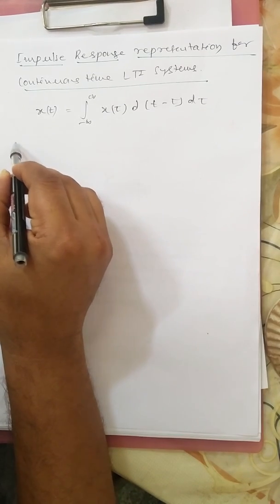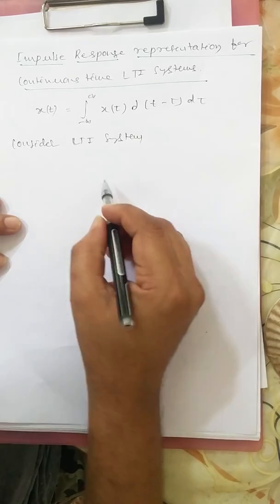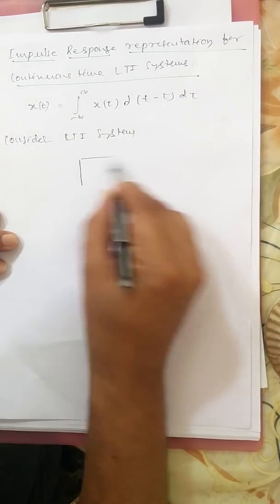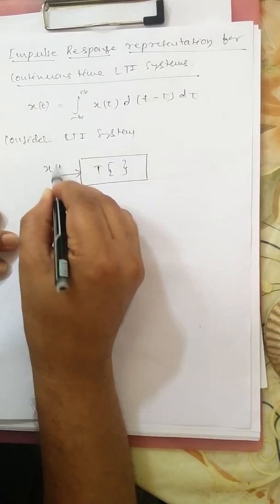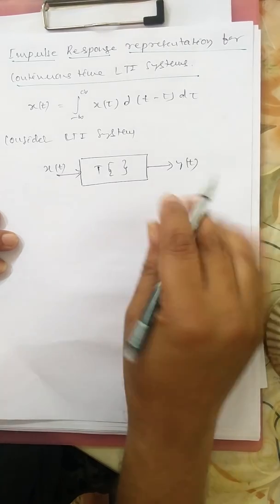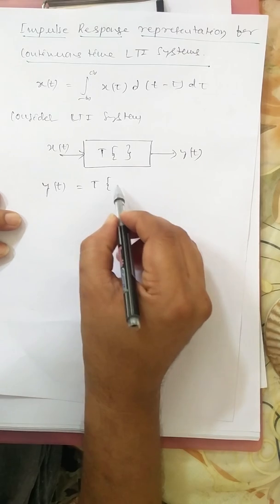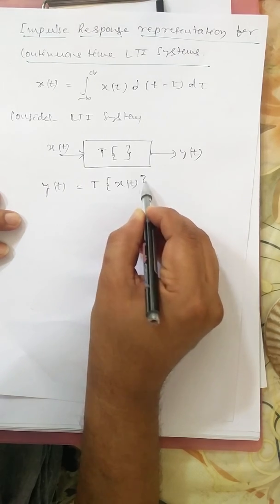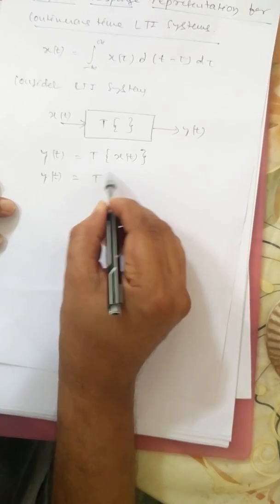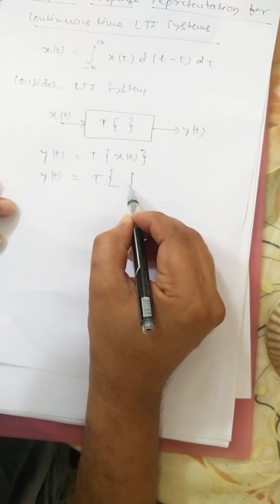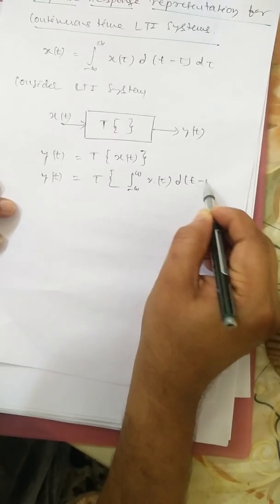Now let us consider an LTI system. T is the operator of the system, x(t) is the input, and y(t) is the output. y(t) equals T applied to x(t), where the operation is done on the input signal. y(t) = T{x(t)} is expressed as a weighted superposition of time-shifted impulses, that is the integral from minus infinity to plus infinity of x(τ) times δ(t − τ) dτ.